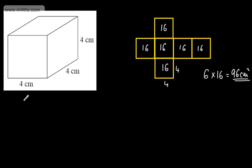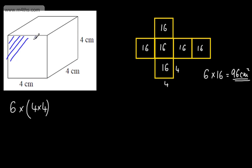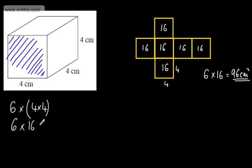Let's look at the other way. All I'm going to say is that I have six equal faces of four multiplied by four. I'm simply finding the area of one of the faces and multiplying my answer by six. So this will give us six multiplied by 16, which is going to give us exactly the same answer of 96 centimetres squared. So with a cube, as you can see, it's a lot easier just going this way.